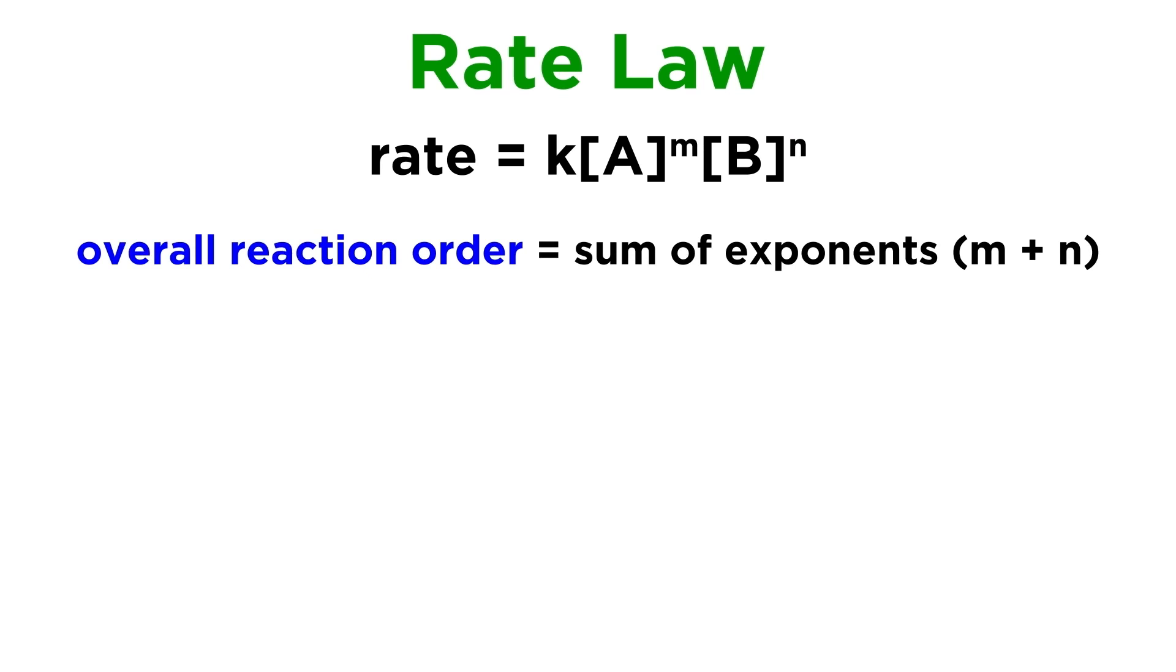The overall reaction order is simply the sum of the individual reaction orders. So if M and N are both one, the overall reaction order is two, since one plus one equals two.